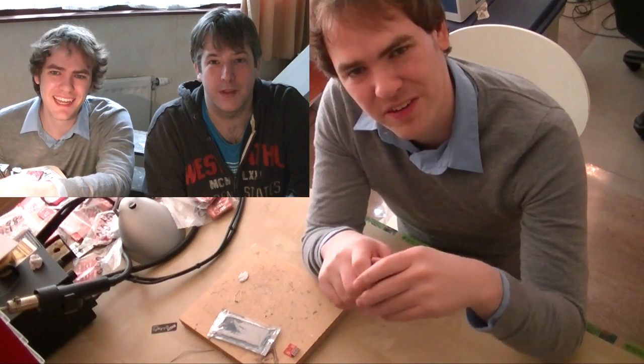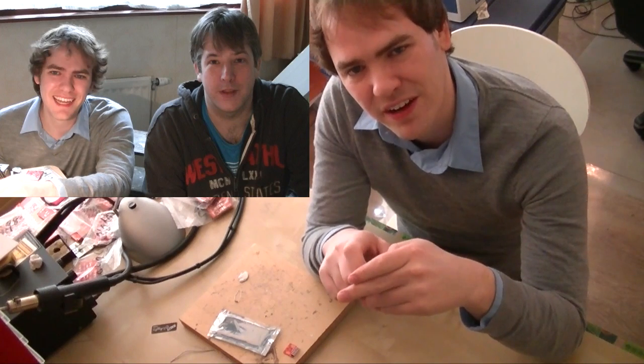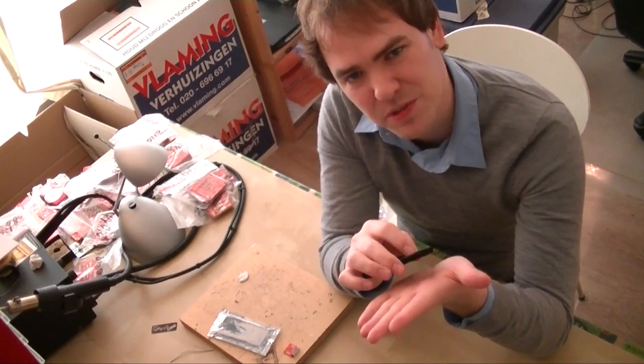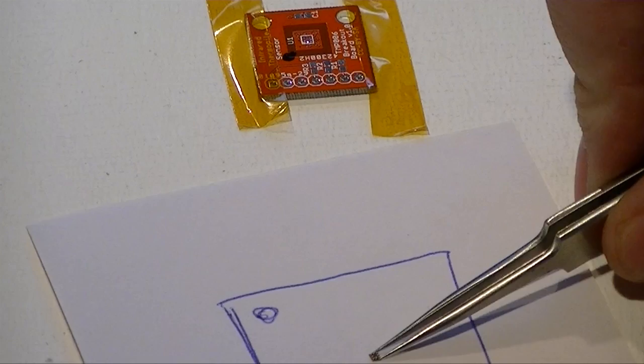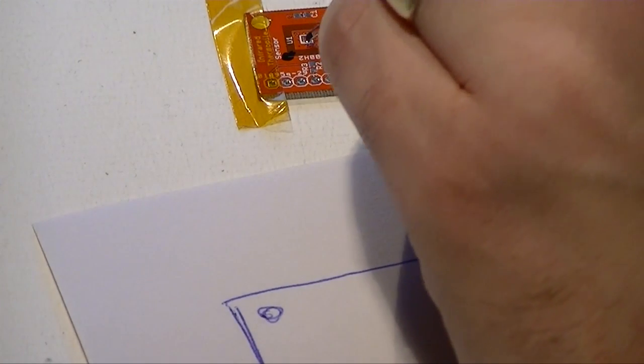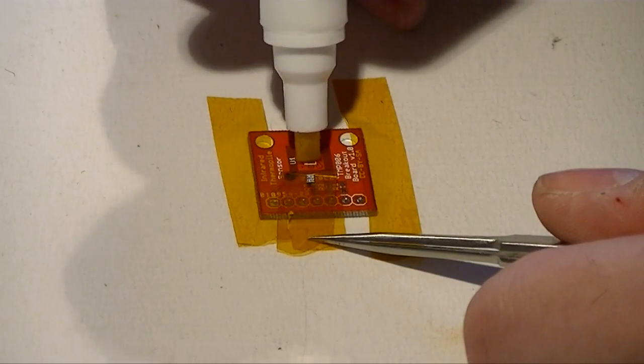A couple weeks ago, Schock and I tried to solder the TMP006 non-contact temperature sensor. It's a thermometer from Texas Instruments that can measure the temperature of things without actually touching it. It only comes in a tiny ball grid array package with little lumps of solder underneath that you need to melt onto your circuit board.